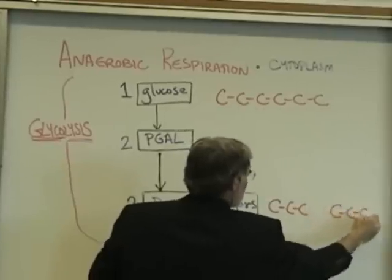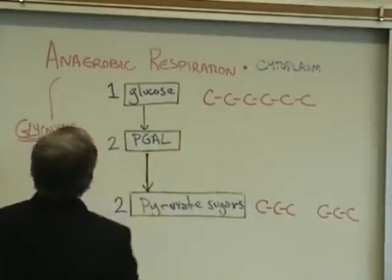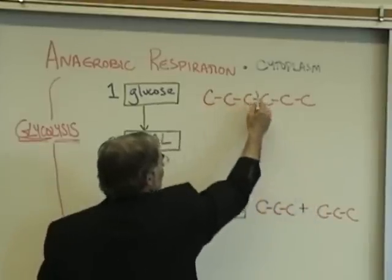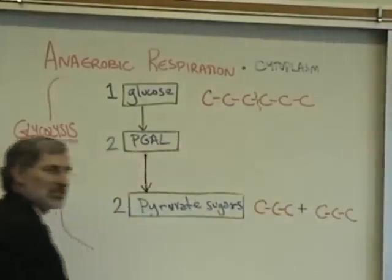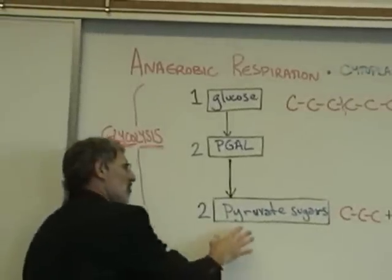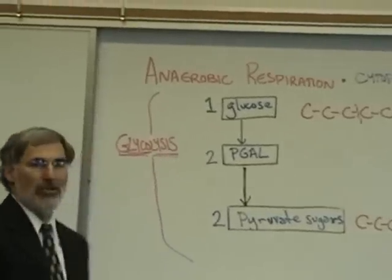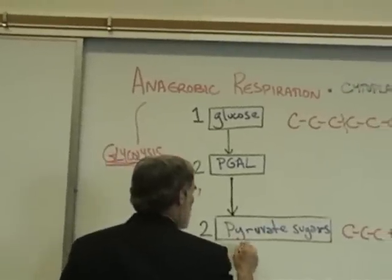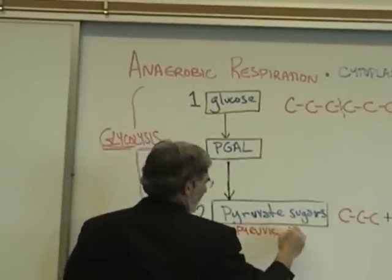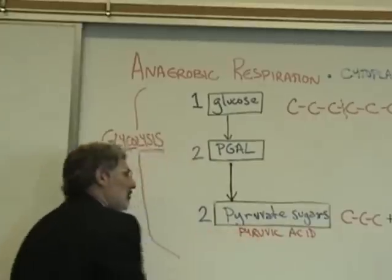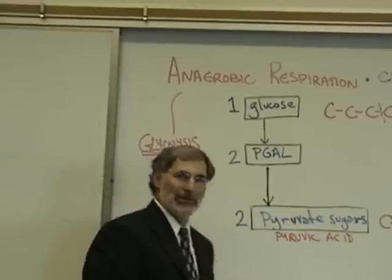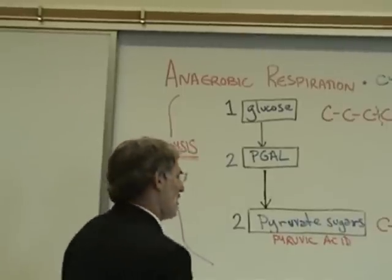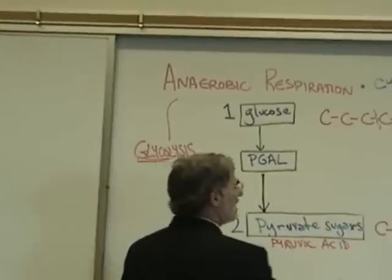So in glycolysis, the glucose has been split right in half, forming two three-carbon sugars called pyruvate sugars — often just called pyruvate for short, and also commonly called pyruvic acid. It's unfortunate that books do not agree on terminology; in the same book you may see these sugars referred to in one paragraph as pyruvate and another as pyruvic acid, but it means the exact same thing.